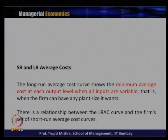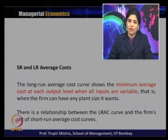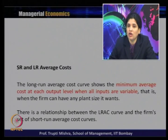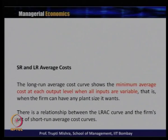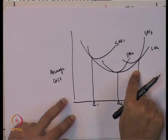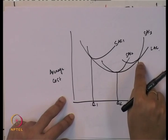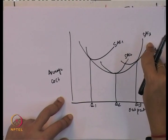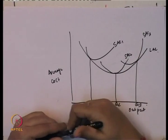The long run average cost curve shows the minimum average cost at each level of output when inputs are variable — that is, when a firm can have any plant size it wants. The long run average cost curve takes the minimum of average cost from each short run average cost curve — SAC1, SAC2, SAC3 — giving the minimum average cost at each output level when inputs are variable.